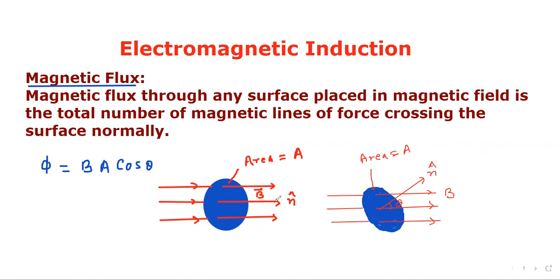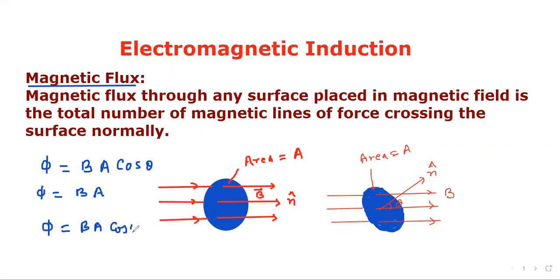In this case, when theta equals 0 degrees, phi will be BA. In the general case, phi equals BA cos theta. Phi is a scalar quantity.